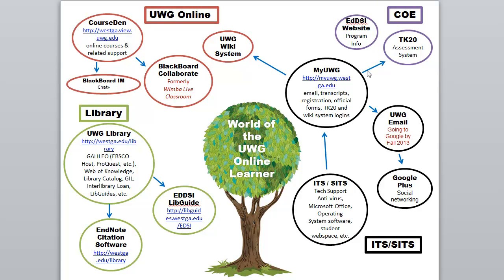Through myUWG you also access something called TK20. TK20 is an assessment system used in the College of Education to track the progress of students from undergraduate through graduate programs — for outside accountability and internal program improvement. You'll be doing assessments throughout your doctoral program to track your growing knowledge, skills, and abilities as a doctoral candidate. You'll probably be inputting your first artifact within the first six months to a year — we did in our cohort. A lot of the work you do in your first summer, fall, and spring semesters will point toward artifacts that may go into that TK20 assessment system.